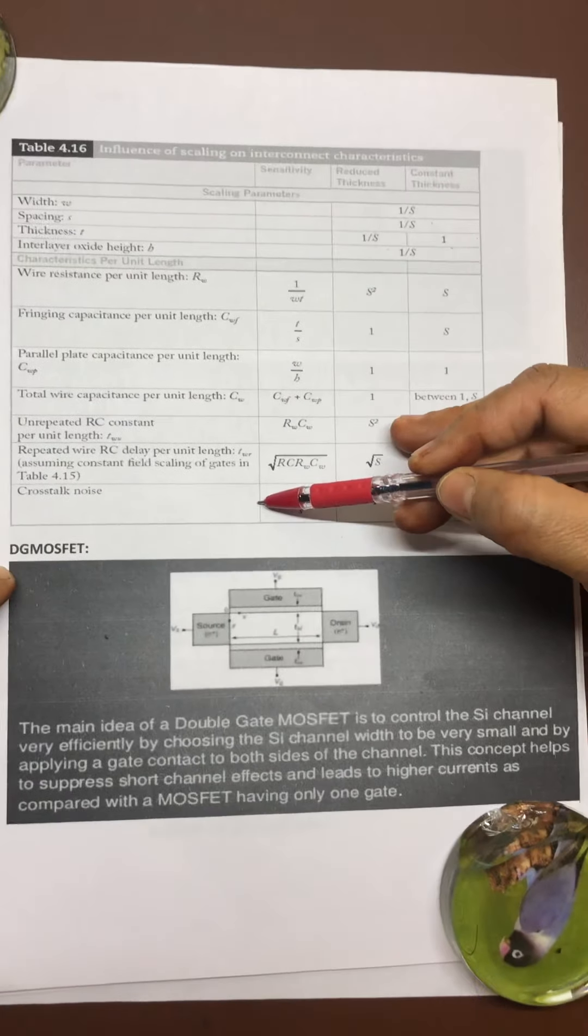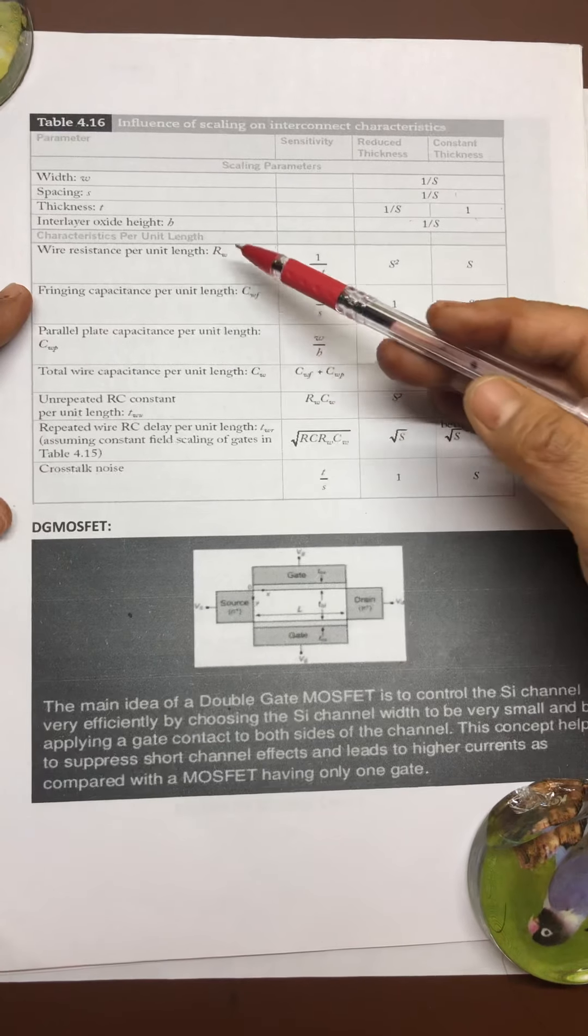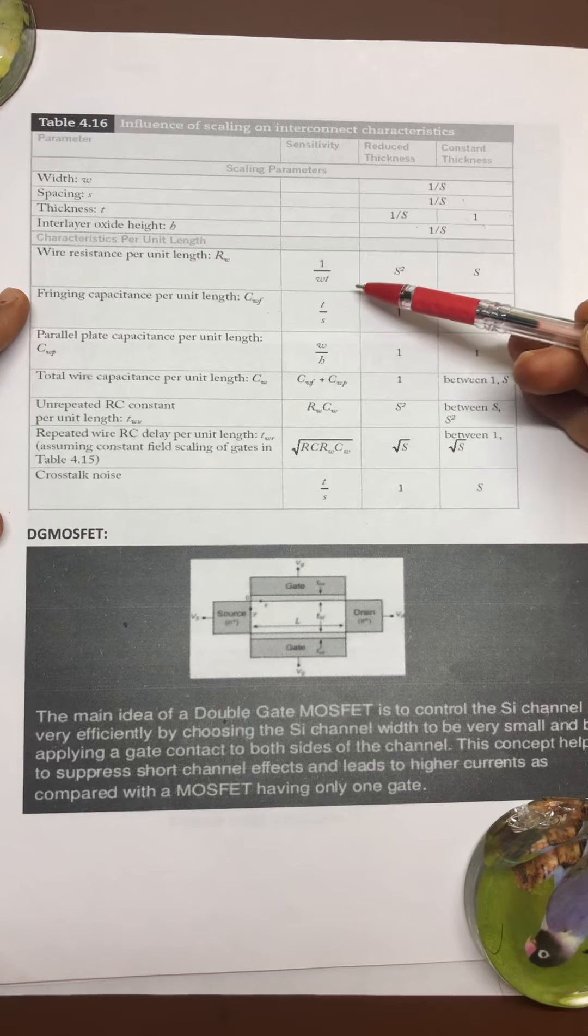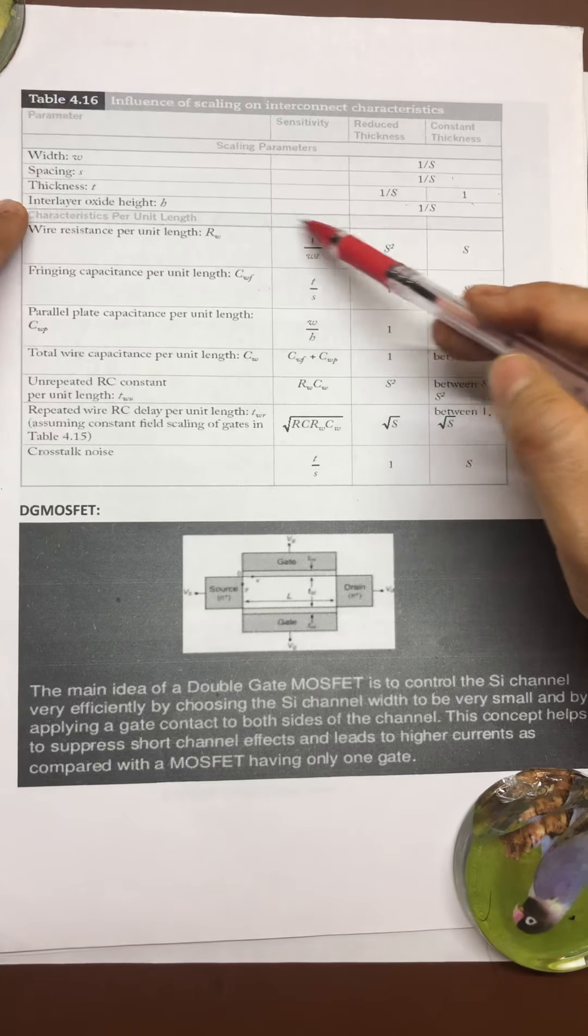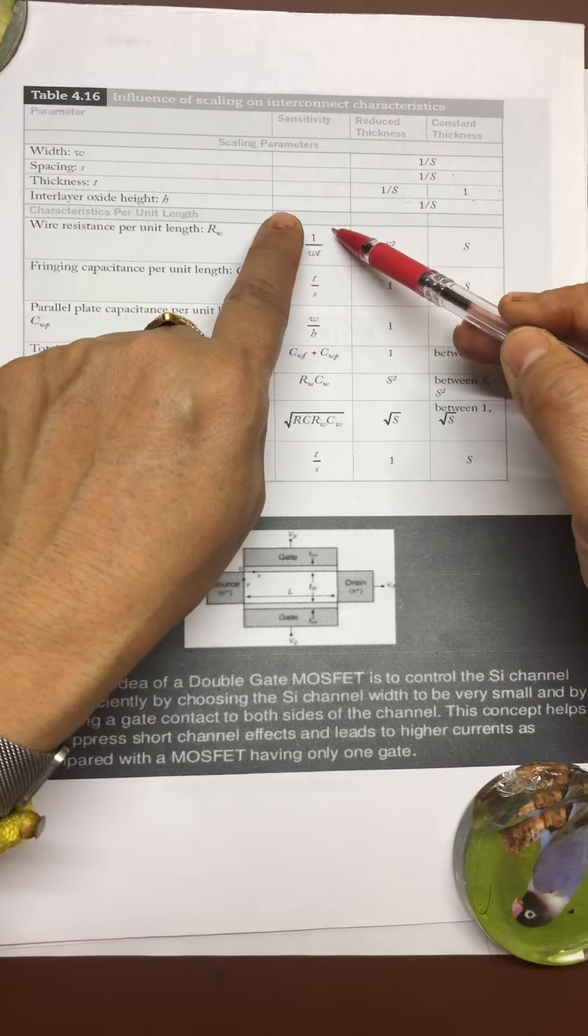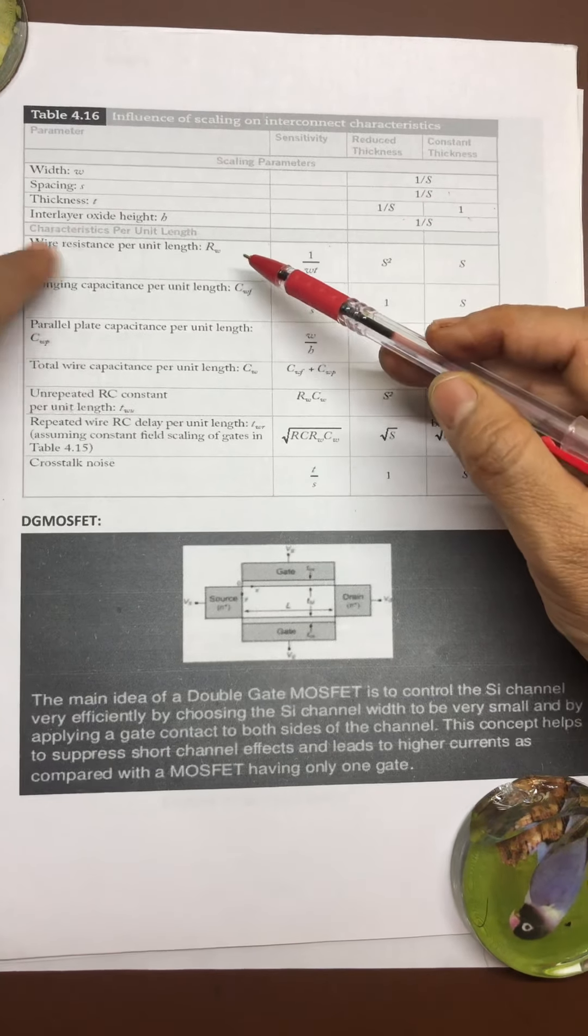Then we have certain parameters like wire resistance per unit length R_W, that is the sensitivity of this. Look at here, scaling parameters which are nominal, their sensitivity is nothing but per unit length parameters coming into account as far as interconnect characteristics are concerned. Their sensitivity parameters are going to be there.